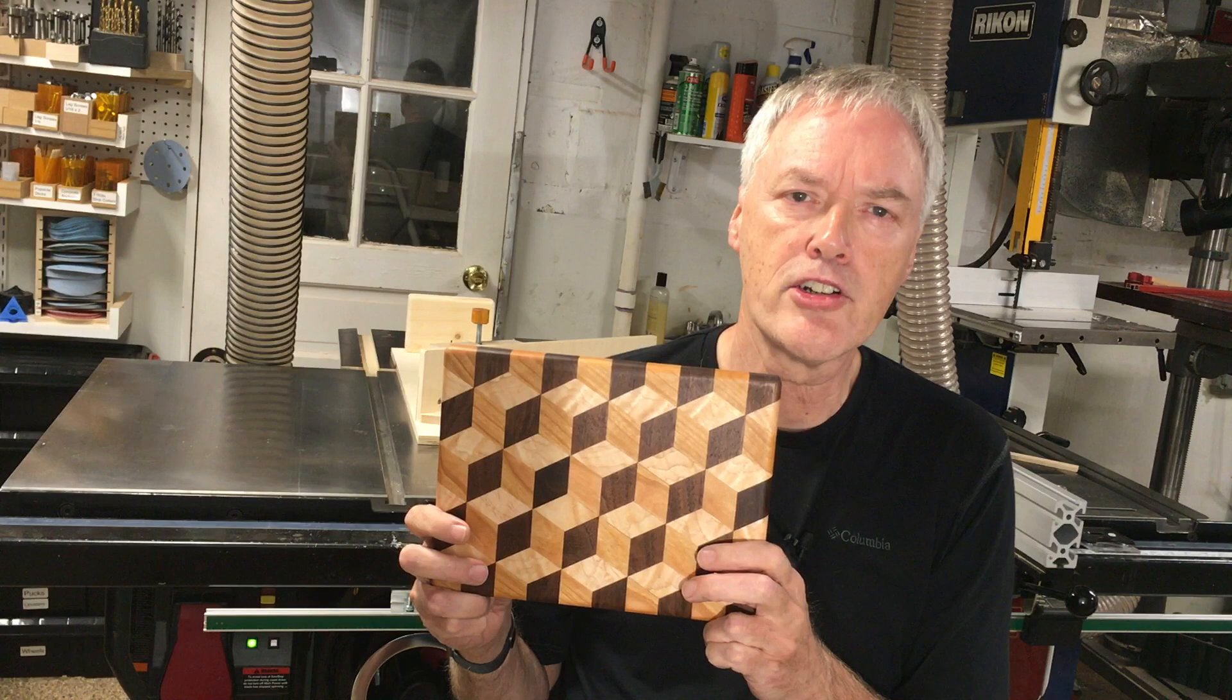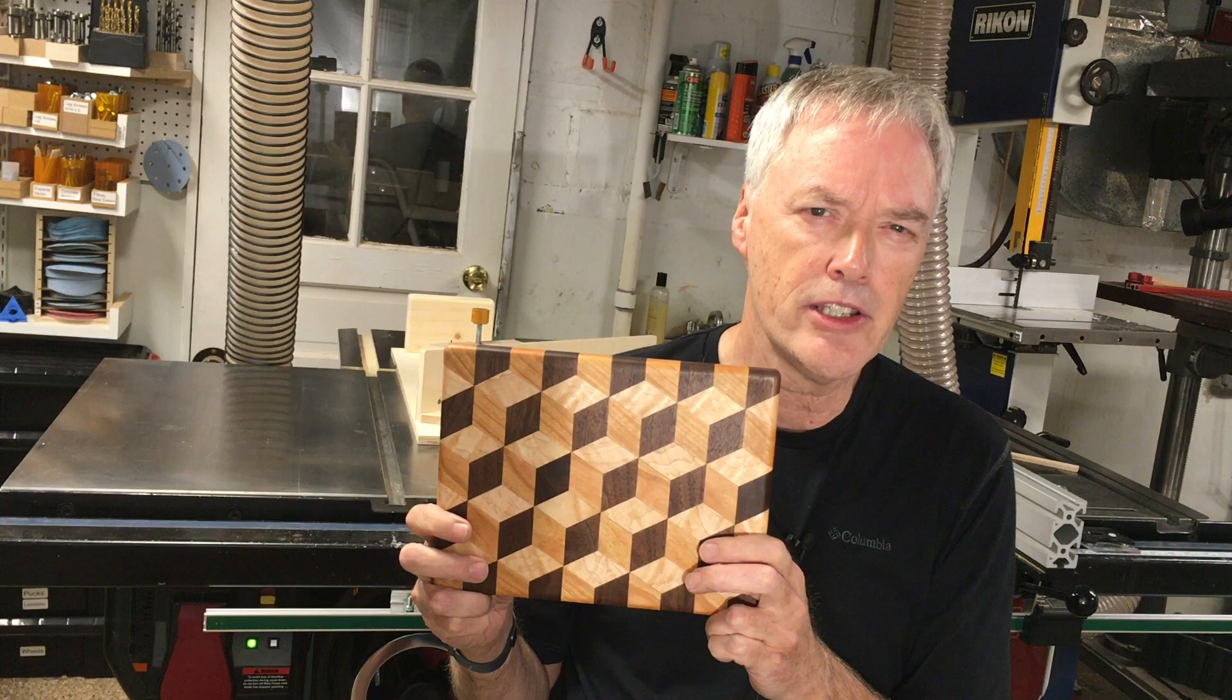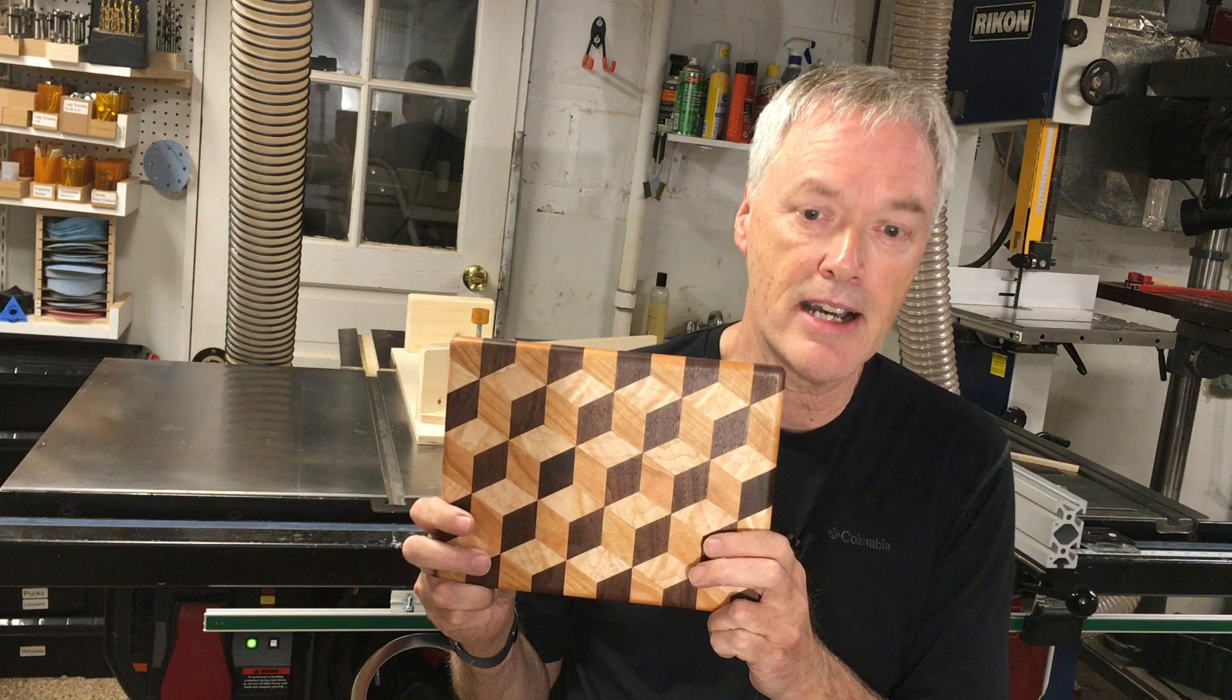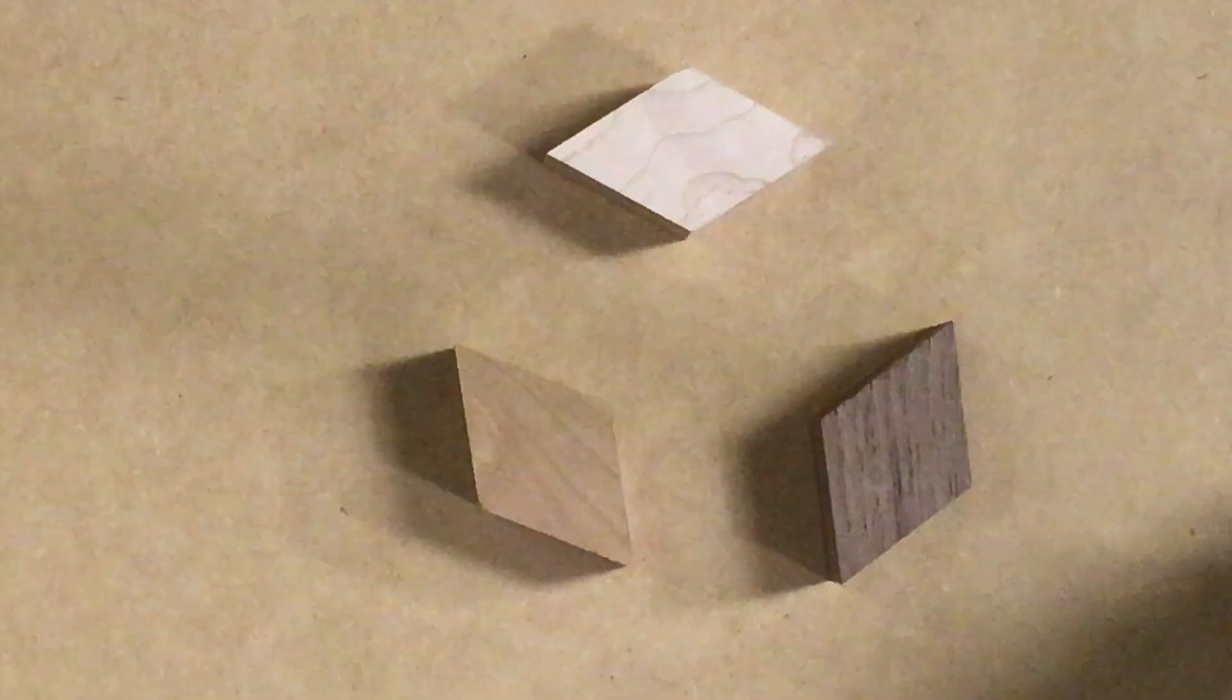When Louis Cubes are used as furniture decoration, the pieces are usually veneer cut with a razor knife. You can find lots of videos on the web describing how to do that. There are fewer videos about doing Louis Cubes in solid wood like this. The ones I found were either short on detail or used techniques that didn't work out very well for me. In this video, I'll show you how I make cutting boards like this one, and I hope I can spare you some of the trial and error that I had to go through.